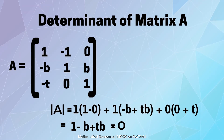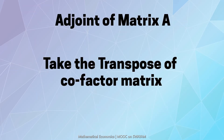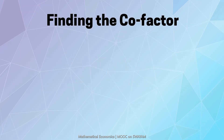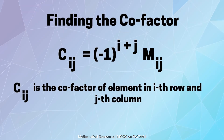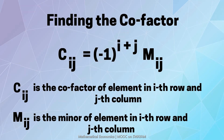Pause the video for a few seconds and understand how the determinant is calculated. The adjoint matrix of matrix A is obtained by taking the transpose of the cofactor matrix. The cofactor of an element is obtained by the formula: Cij is equal to minus 1 to the power i plus j into Mij, where Cij is the cofactor of the element in the i-th row and j-th column and Mij is the minor of the element in the i-th row and j-th column.